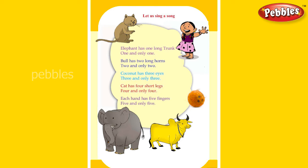Each hand has five fingers, five and only five. Let us sing the song once again. Elephant has one long trunk, one and only one. Bull has two long horns, two and only two. Coconut has three eyes, three and only three. Cat has four short legs, four and only four. Each hand has five fingers, five and only five.